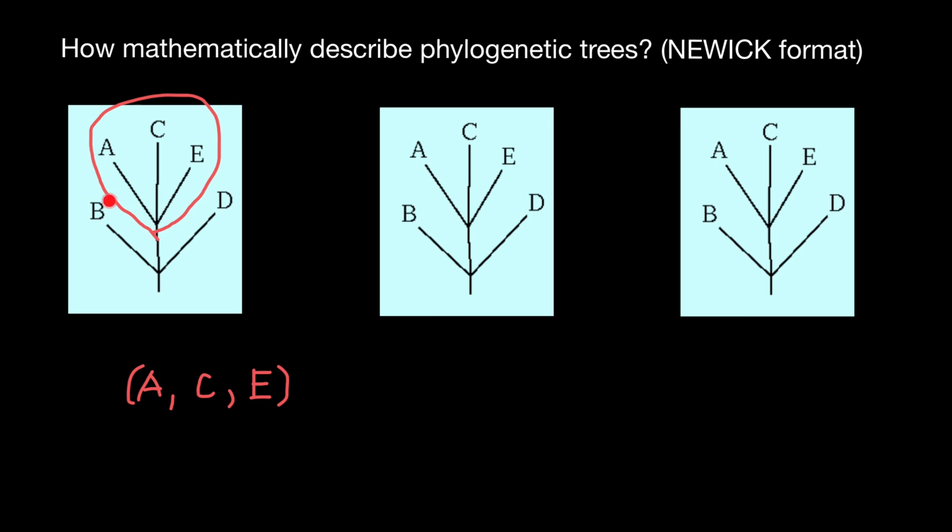And we also have here a group B and D. So we describe them as B and D, and also include them in parentheses. As you see, very easy language. And we also add a semicolon here. That means that we end the description of this phylogenetic tree.